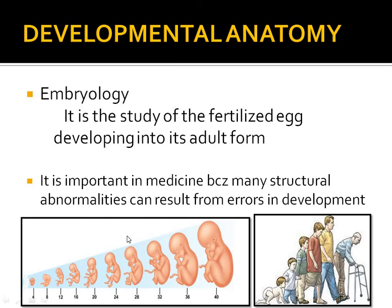Developmental anatomy is the study of the development of structures. An example is embryology — the study of how a fertilized egg develops into adult form. Embryology is important in medicine because many structural abnormalities develop when there is an error in development — that is developmental anatomy.